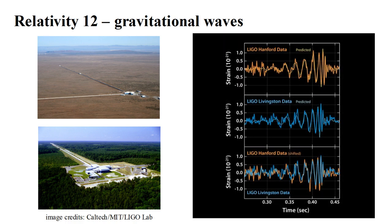On September 14, 2015, LIGO made the first reported observation of a gravitational wave. In this video, we'll see how general relativity predicts gravitational waves, what they are, and how they can be detected.